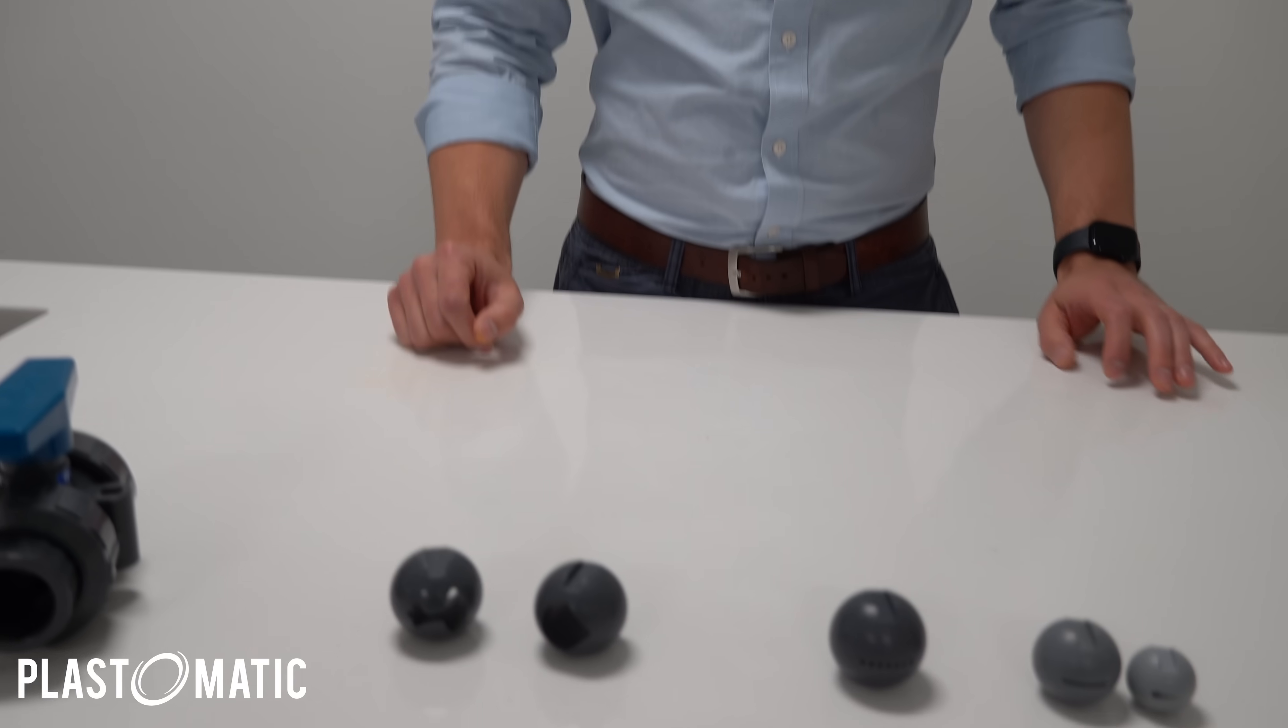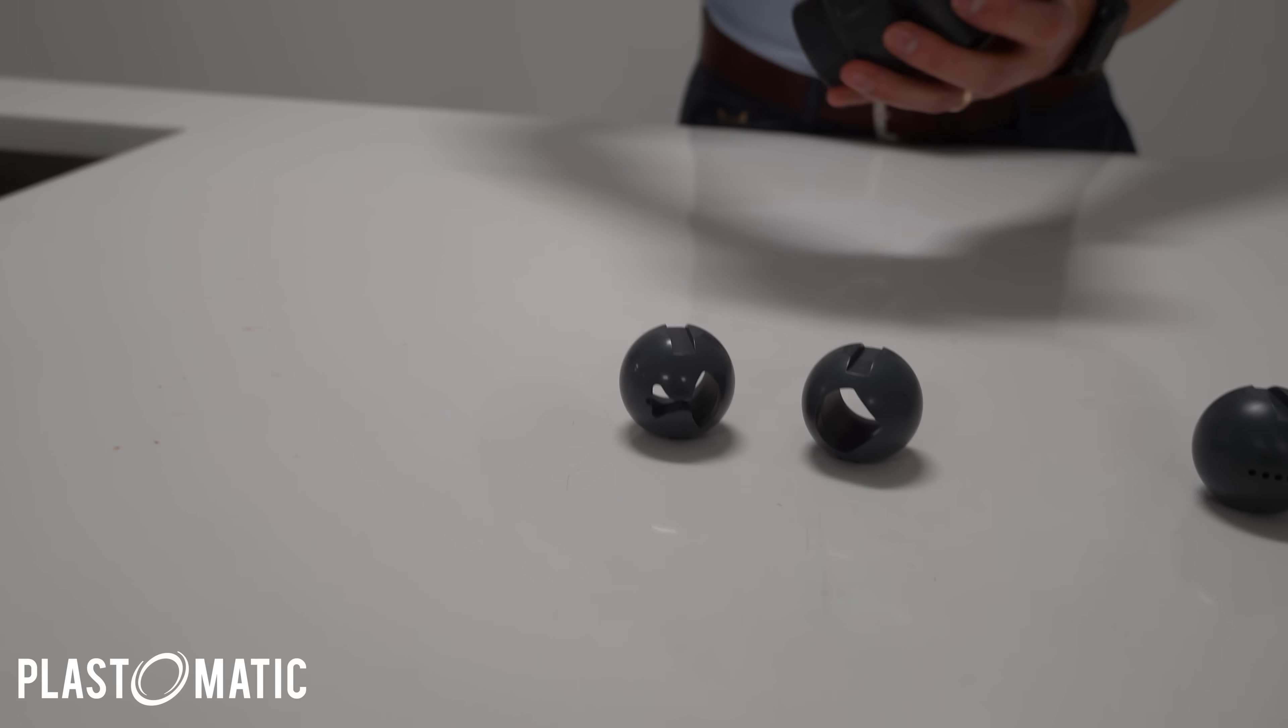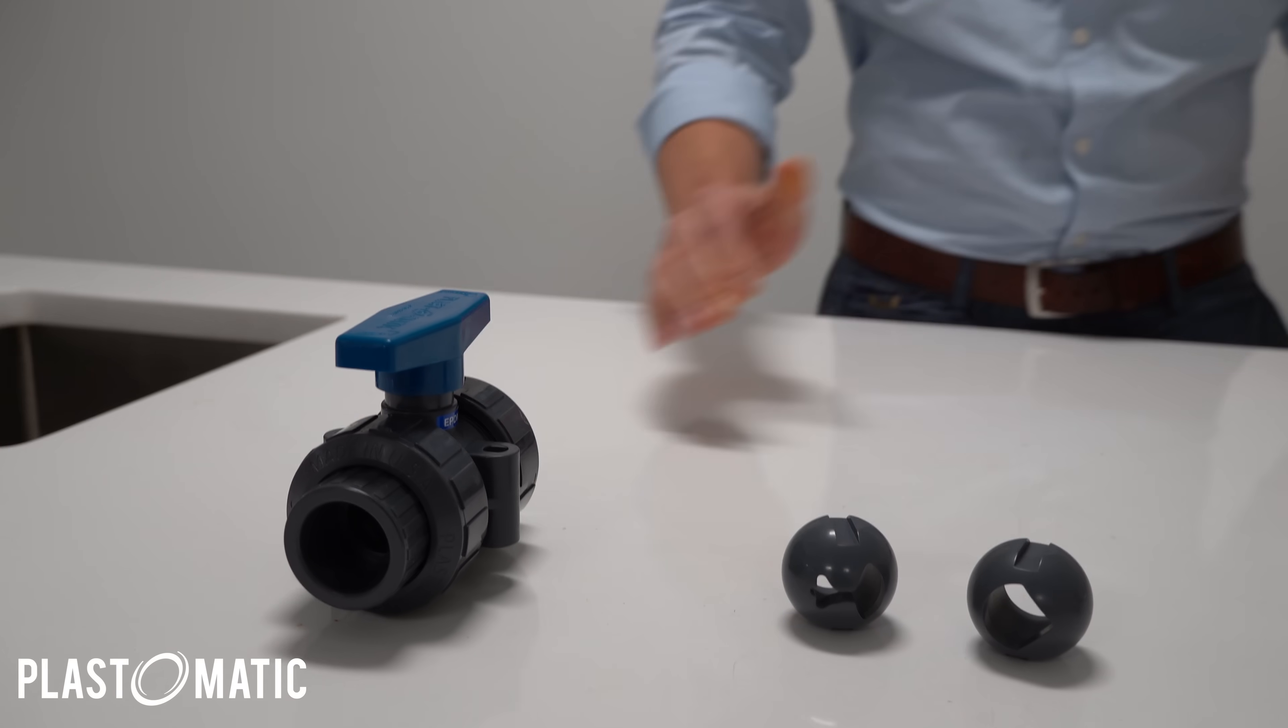So a linear flow ball, essentially what it will do is, as you turn the handle towards open, the 90-degree turn, your flow curve, if you were to graph it, will be exactly linear. So if you had a full-port ball, this might be way too much flow and you might not be able to dial it in as perfectly as you would like to. So using a characterized ball, the flow curve is just much more predictable, much more linear, so you're able to dial it in pretty much by degree open. You should expect this amount of flow.